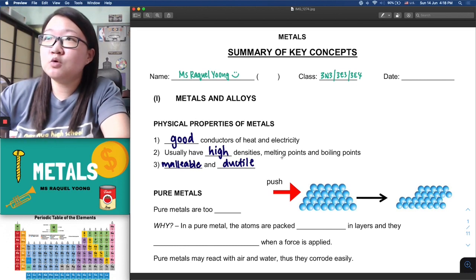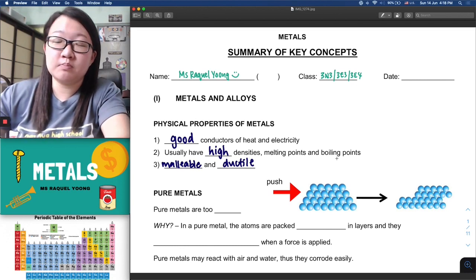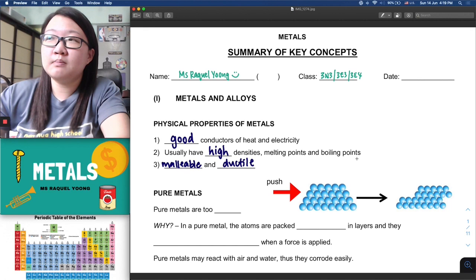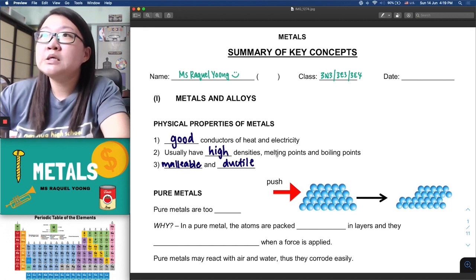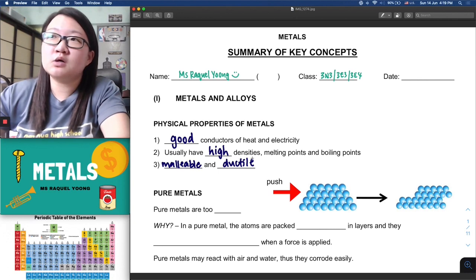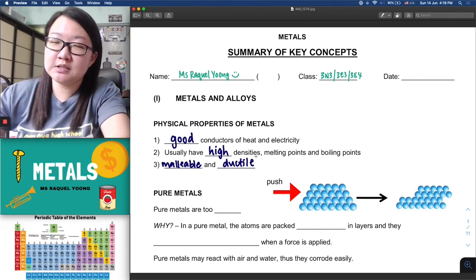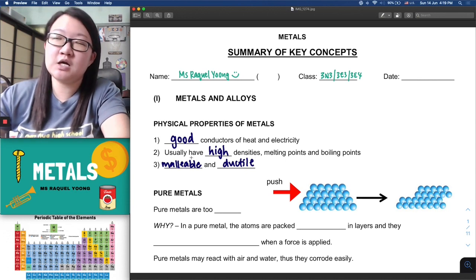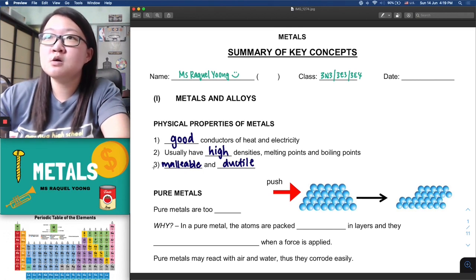Number two, they usually have high densities, so they weigh quite a bit and can feel very heavy and dense. They also have very high melting and boiling points, so you need a lot of energy to melt it, much less to boil it. But the key word here is usually.